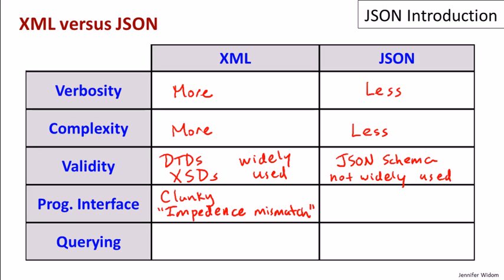The impedance mismatch has been discussed in database systems for decades, because one of the original criticisms of relational database systems is that the data structures used in the database — specifically tables — didn't match directly with the data structures in programming languages. So there has to be some manipulation at the interface between programming languages and the database system. That same impedance mismatch is pretty much present in XML, whereas in JSON it's really a more direct mapping between many programming languages and the structures of JSON.